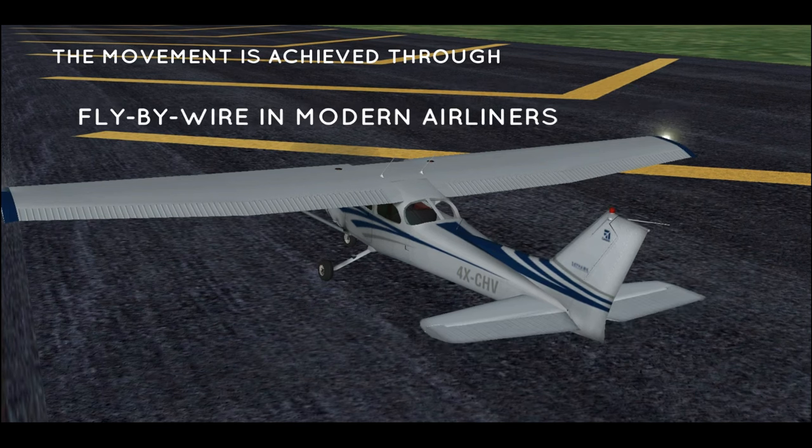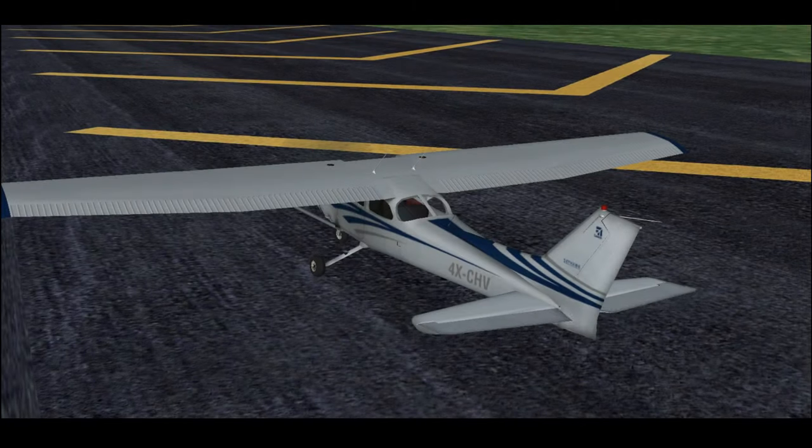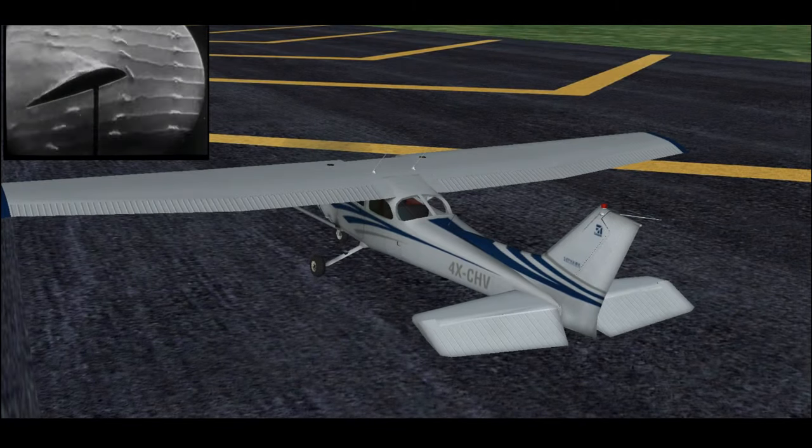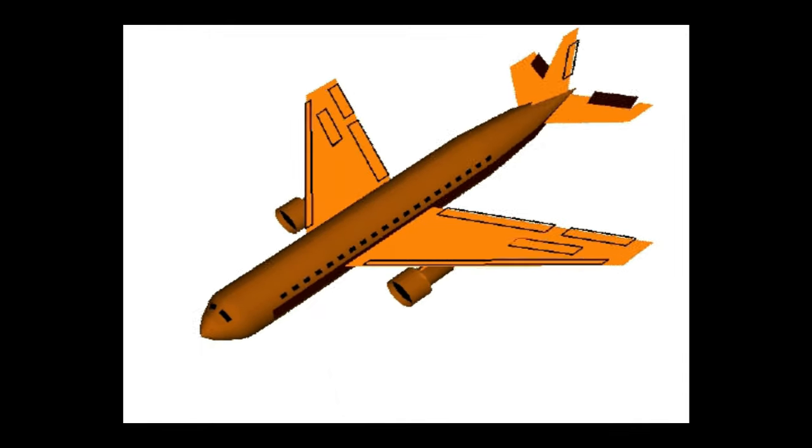As they move up or down, which is achieved through linkages in older aircraft and through fly-by-wire systems in modern airliners, there is a net up or down force. When the elevator moves down, it increases the camber and hence the lift on the horizontal stabilizer will increase. This increment in lift will create an upward force away from the center of gravity. Result: the aircraft will rotate nose down about its CG.